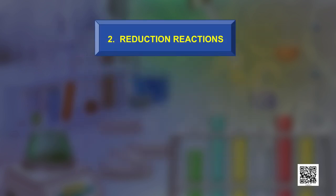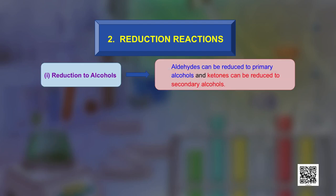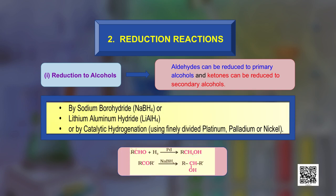For reduction reactions, aldehydes can be reduced to primary alcohols and ketones to secondary alcohols using sodium borohydride (NaBH₄) or lithium aluminium hydride (LiAlH₄), or by catalytic hydrogenation using finely divided platinum, palladium, or nickel catalysts.